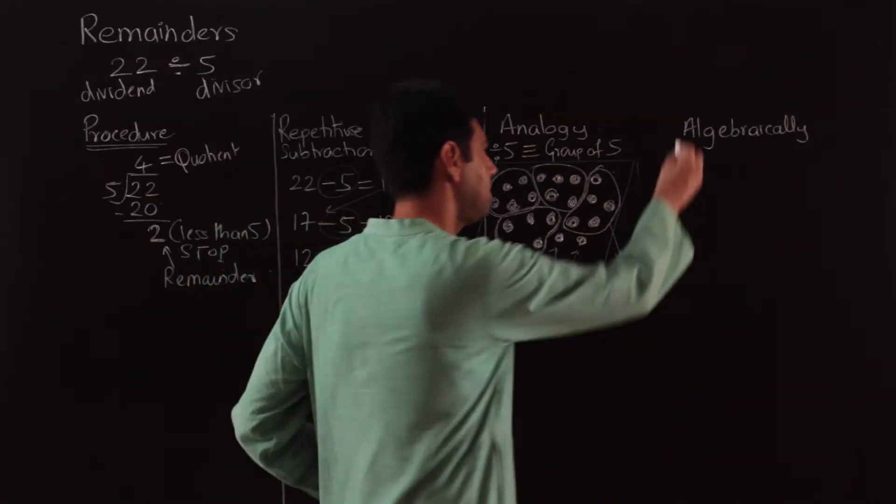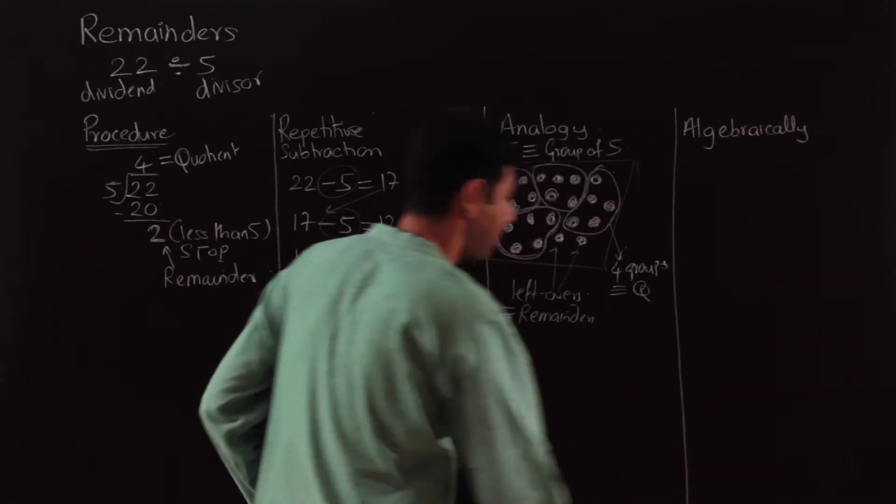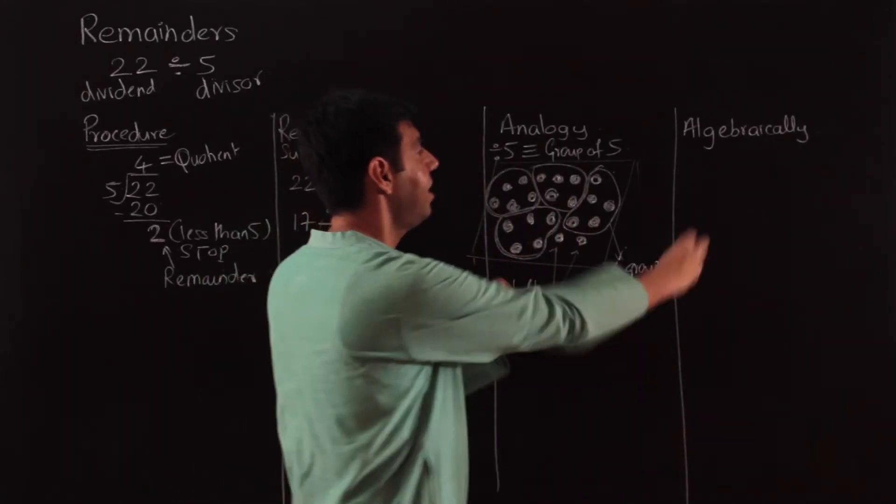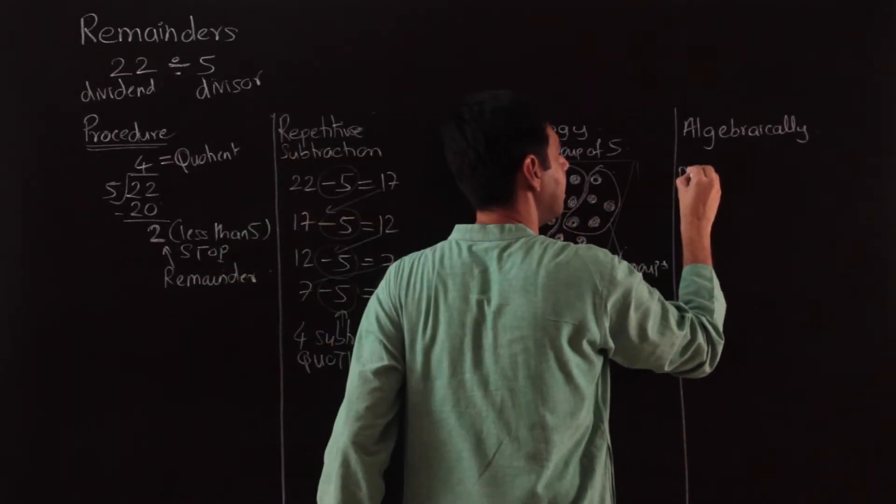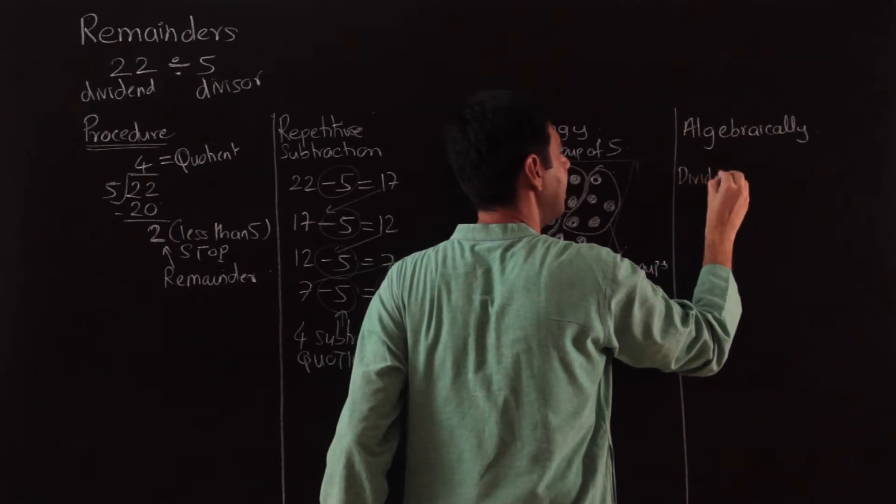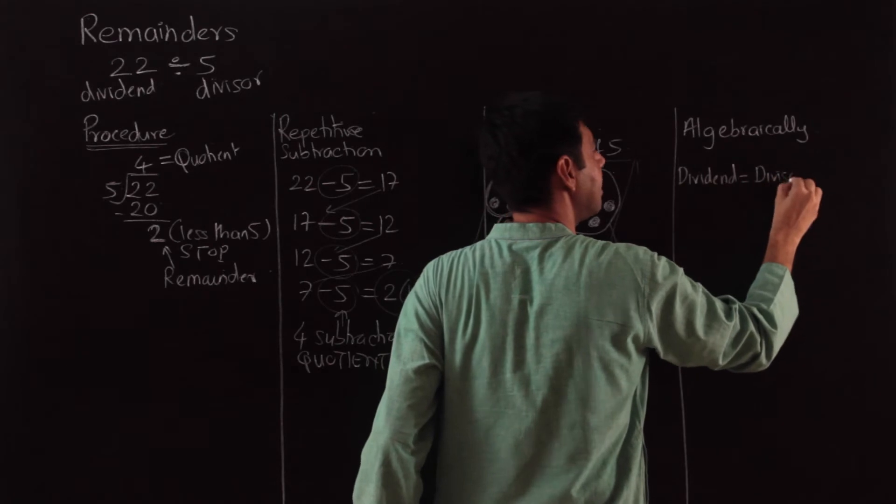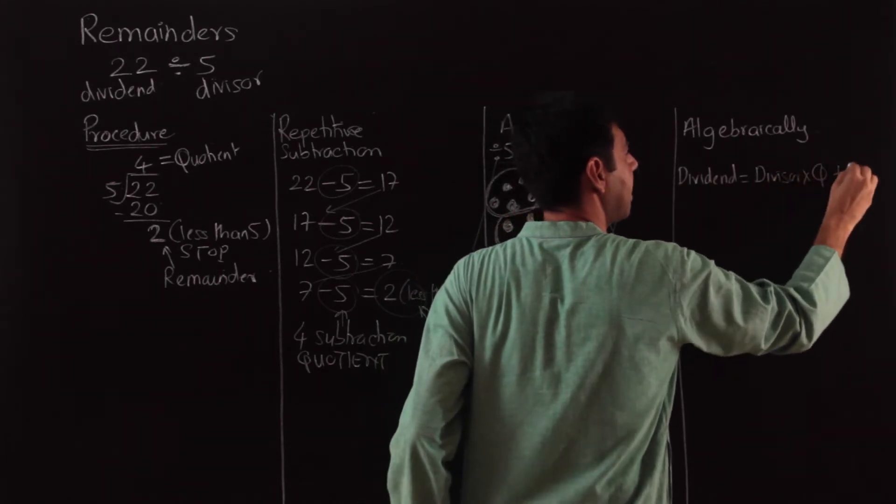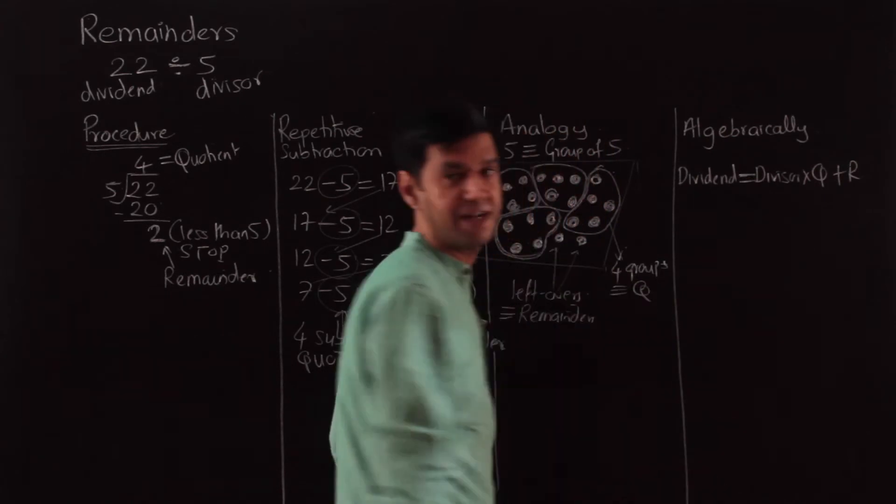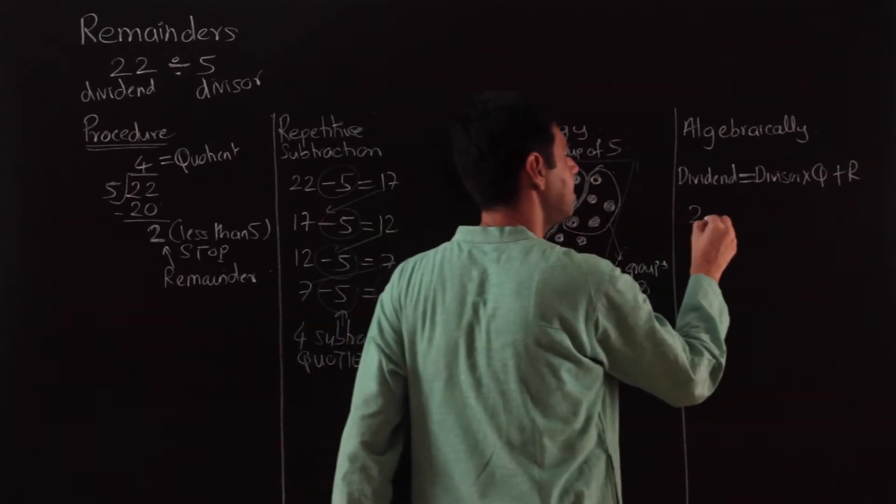Let me introduce the algebraic way. In the algebraic way, the relation is written as: Dividend = Divisor × Quotient + Remainder. Check the equivalence of the left and right hand side. My dividend is 22 and divisor is 5.